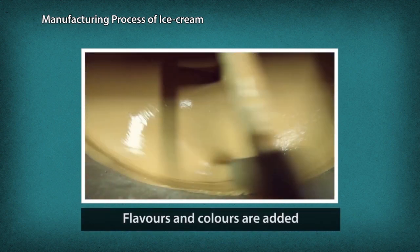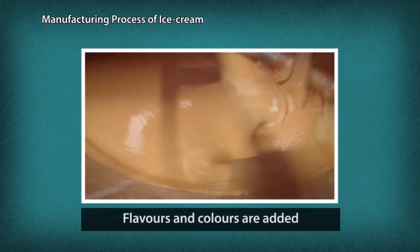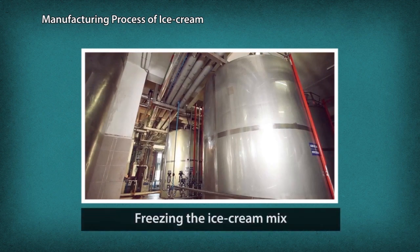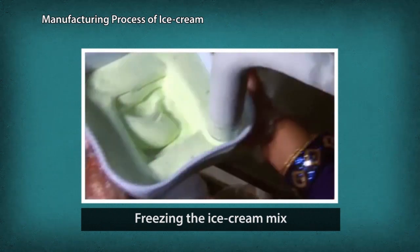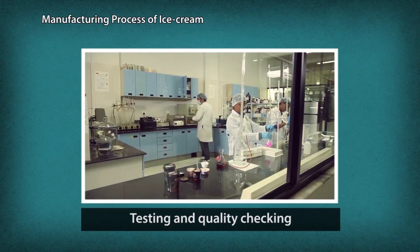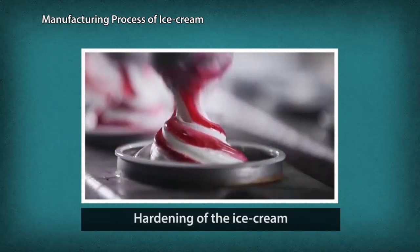For further processing, flavors and colors are added and the mixture is passed through the dynamic freezing process where the temperature is minus 4 to minus 5 degrees centigrade. This process generates the soft, creamy ice cream. A quality test and check is done at this stage for any defects and approval is given before product release.